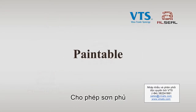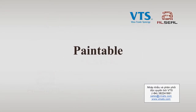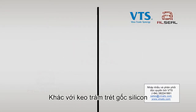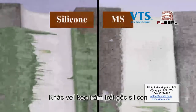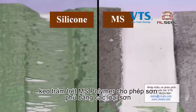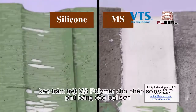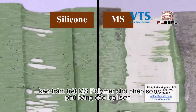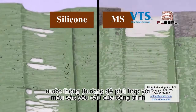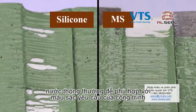Paintable. Unlike silicone sealant, MS Polymer Sealant is paintable with common water-based paints, thus allowing color matching, particularly for exteriors of buildings.